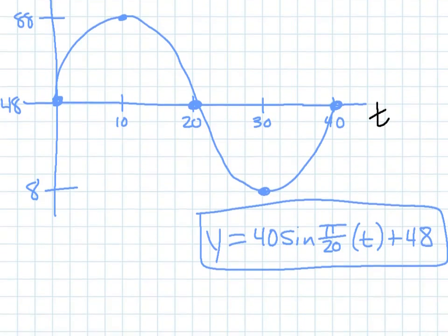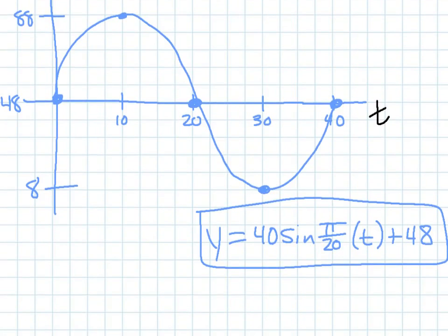So then, my equation will be the amplitude of 40, because that was the radius of the wheel. I use sine, because we started in the middle and went upward with our picture. So that's what I chose.